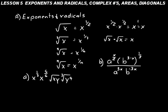For practice problem A, we can simplify x to the one-third times x to the five-sixth, because we know that similar bases multiplied together means we add the exponents. So we have one-third plus five-sixth. We need a common denominator, so let's change one-third to two over six. That gives us x to the two-sixth times x to the five-sixth, which simplifies to x to the seven over six.